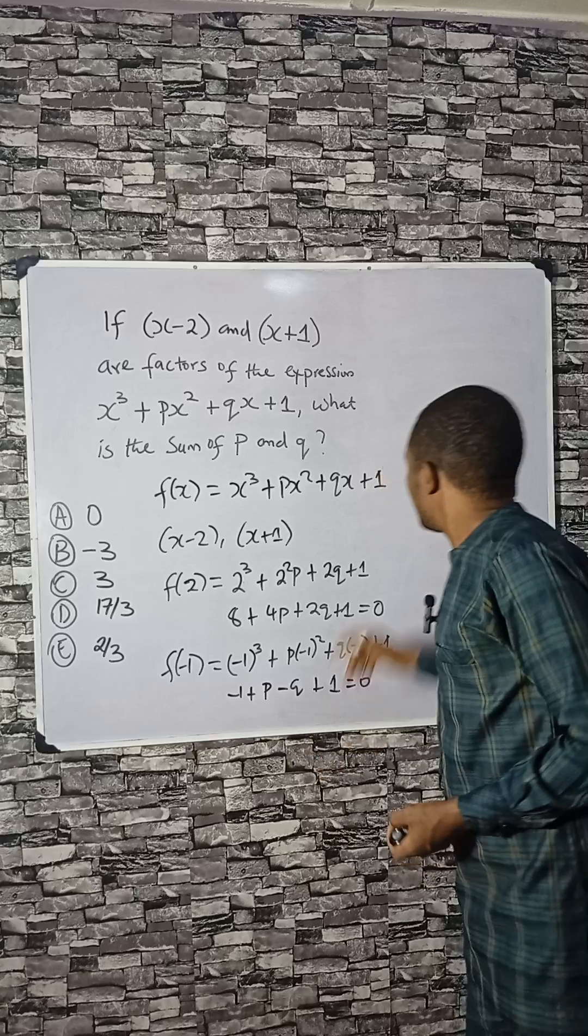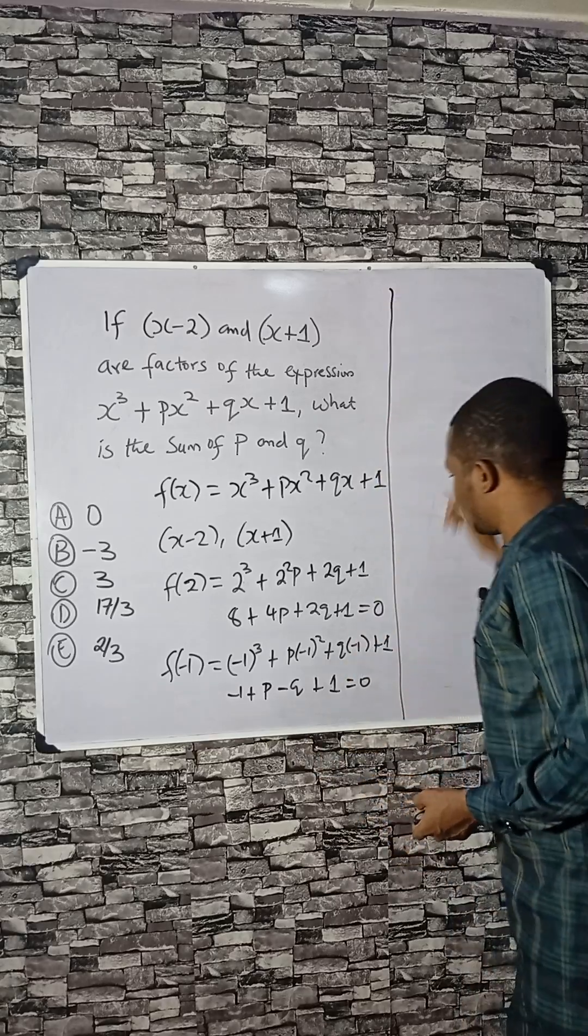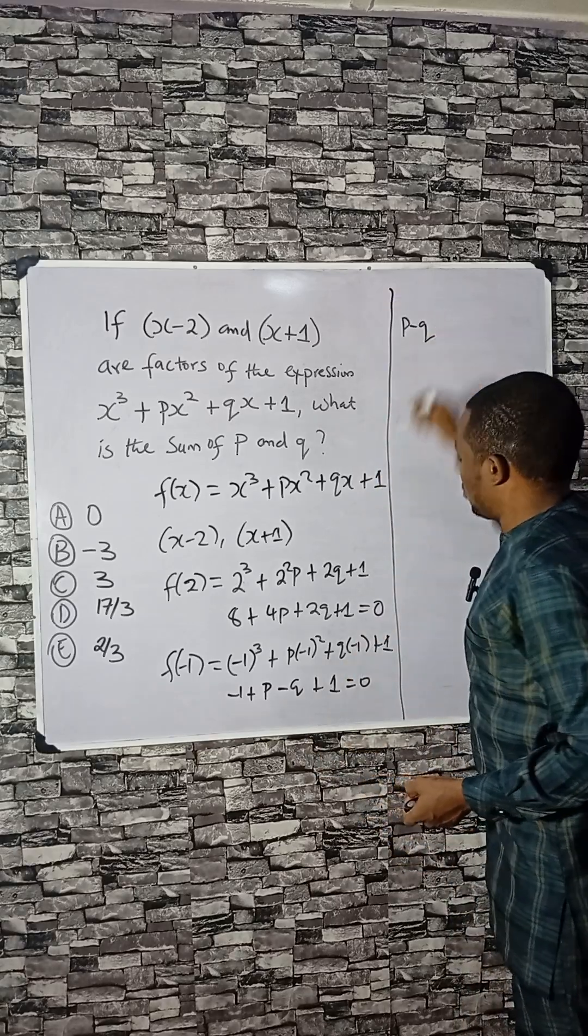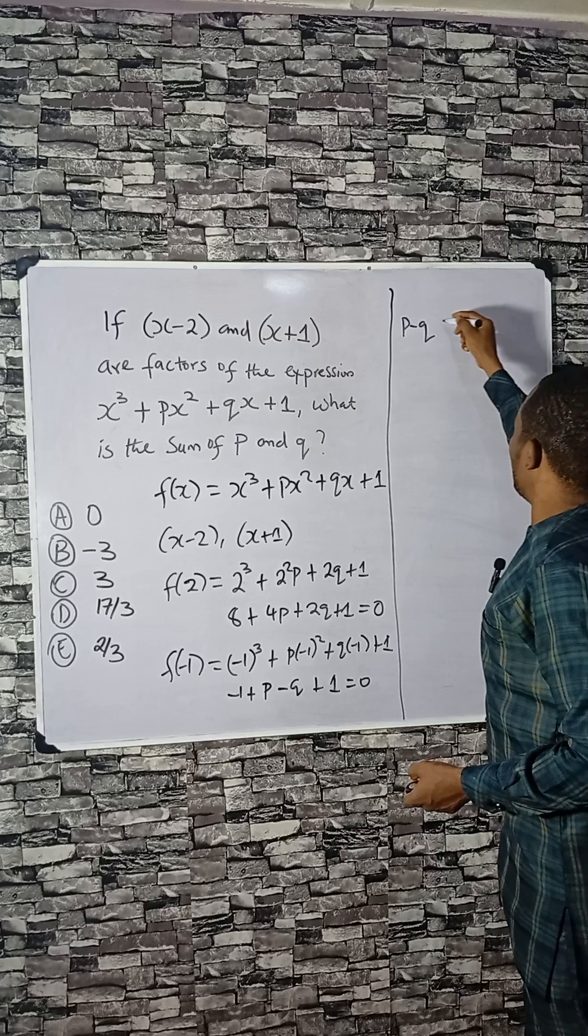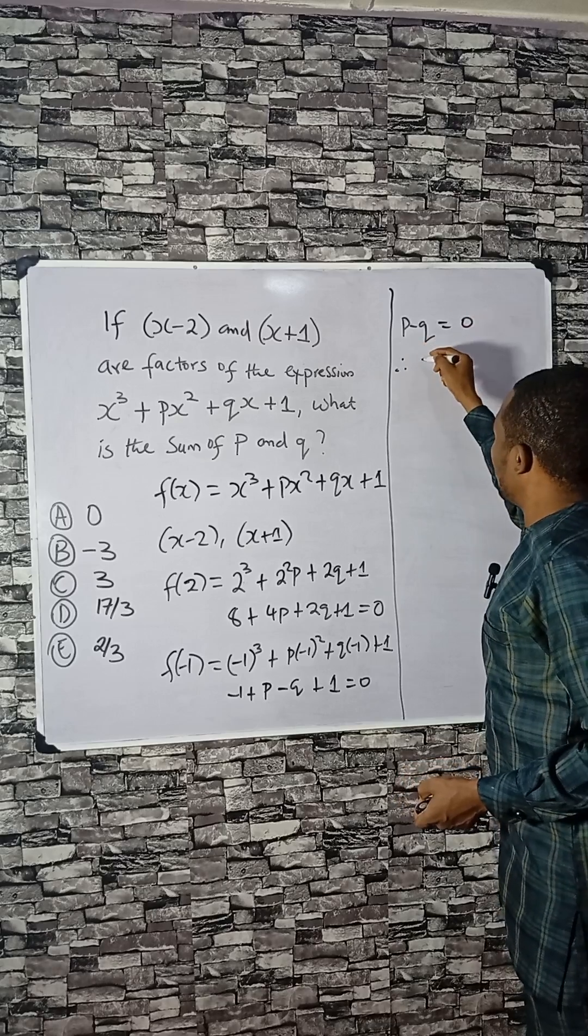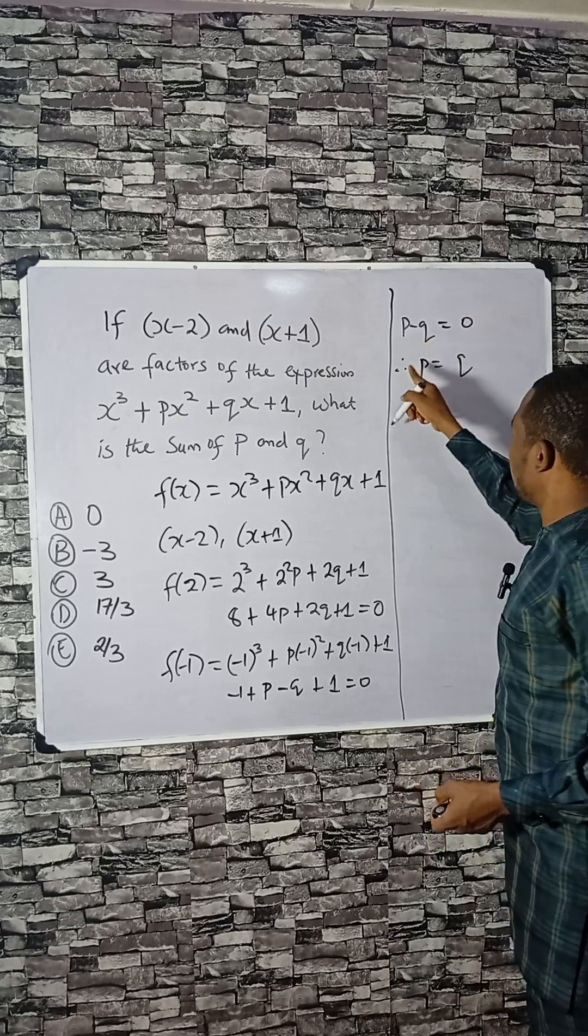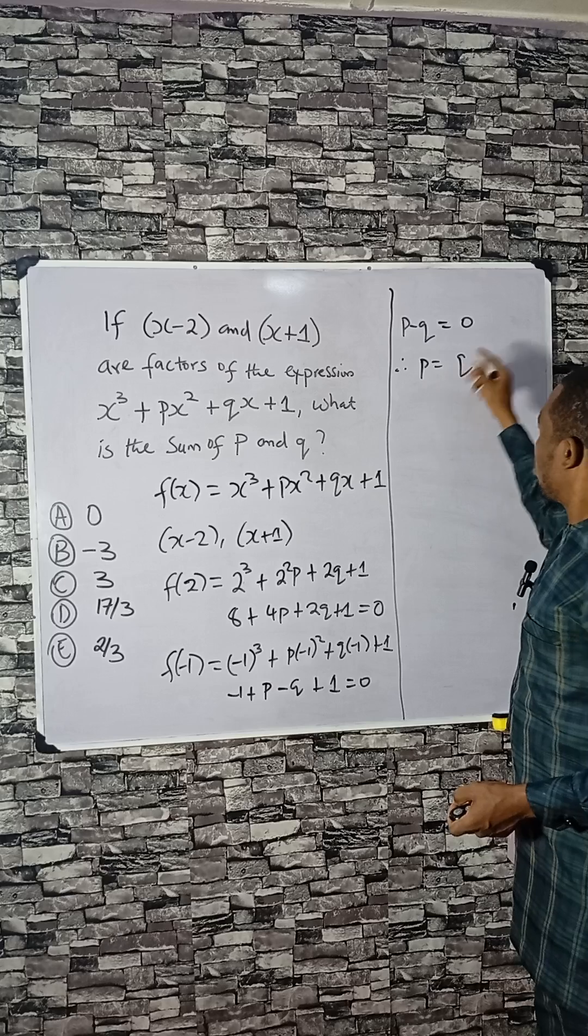So minus 1 plus 1 is 0. So we have p minus q equals 0. Therefore, p equals q.